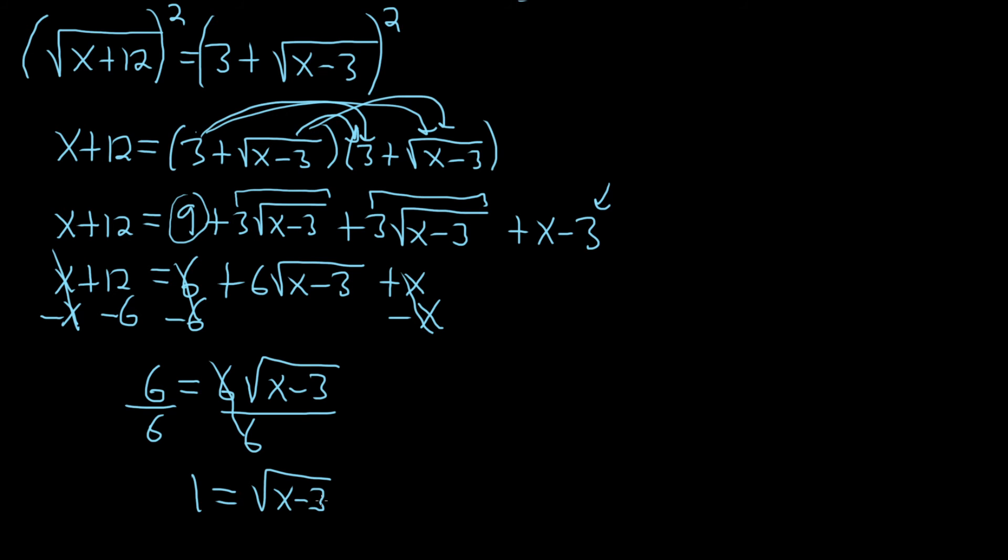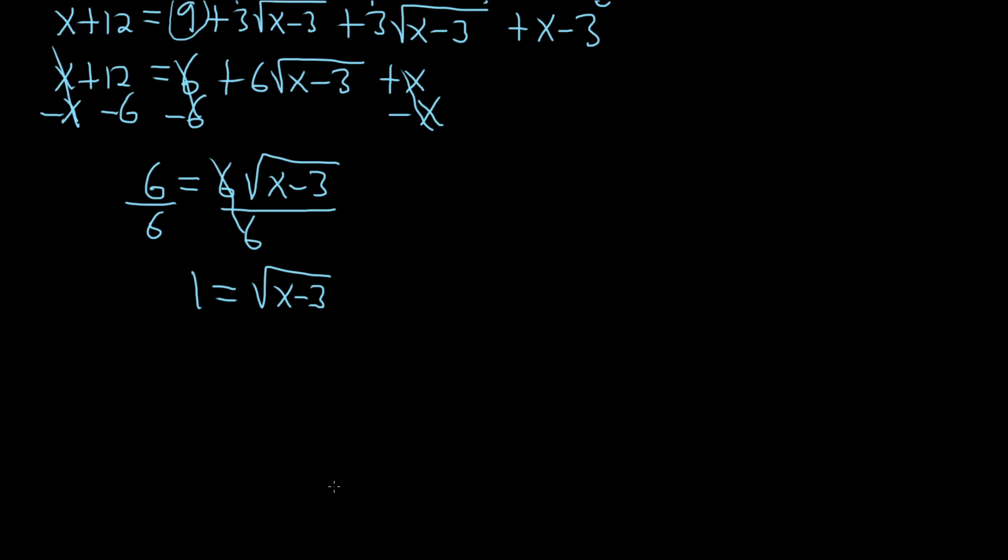Now we need to get rid of the square root, so we square both sides. 1 squared is 1, and on the right side we get x minus 3. We're almost done. All we have to do is add 3 to both sides. So you get x equals 4.